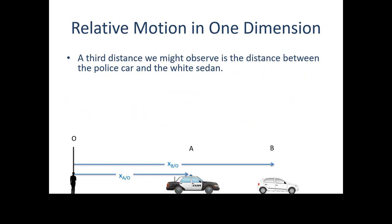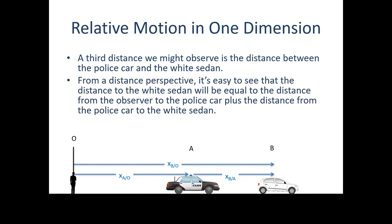A third distance we might observe: if we were the police officer in the police car, we might observe the distance from the police car's position to the white car's position, and this would be X_B with respect to A. From a distance perspective, it's easy to see that the distance to the white sedan equals the distance from the observer to the police car plus from the police car to the white sedan. Adding those two elements gives us the third, and in equation form that is the position relationship in one dimension.